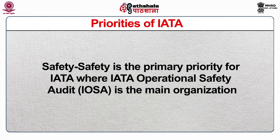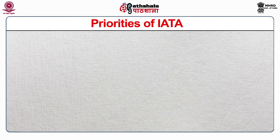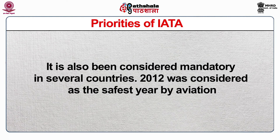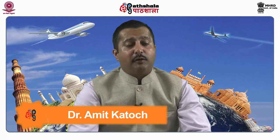The priorities of IATA are as follows. Safety is the primary priority for IATA, where the IATA Operational Safety Audit (IOSA) is the main organization. It is also being considered mandatory in several countries. 2012 was considered the safest year by aviation. Security is equally important due to the existence of heavy threats as well as possibility of attacks. Simplifying the business — simplifying the process of business by electronic tickets, e-tags, web check-in etc. — is also a priority of IATA.